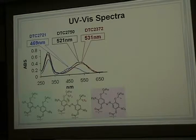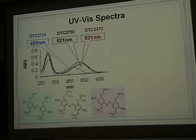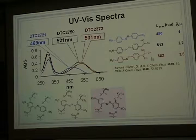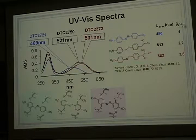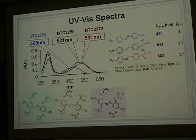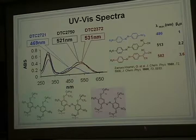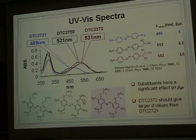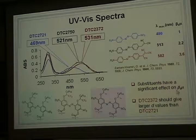Here, we have the electron-withdrawing trifluoromethyl group compared to the nitro group, which decreases the electron-withdrawing ability of this central group. We observe a small blue shift of about 10 nanometers. So if we compare these three different structures, we can see the hyperpolarizability beta is strongly dependent on the maximum absorption wavelength. The larger the absorption wavelength, the larger the beta. By comparing these three structures, we can see the substituents have a significant effect on hyperpolarizability.